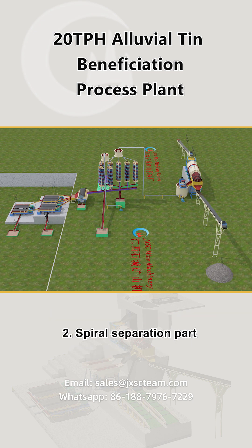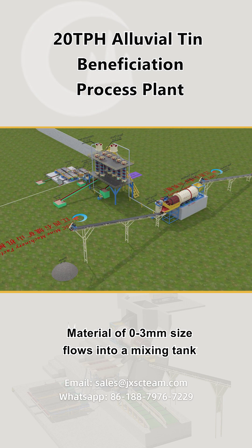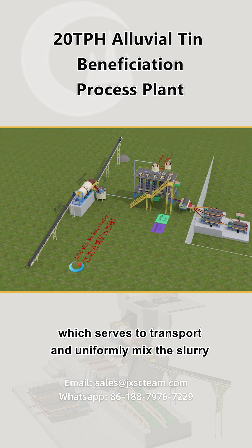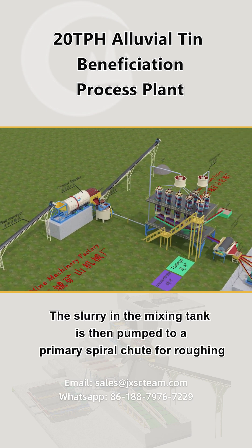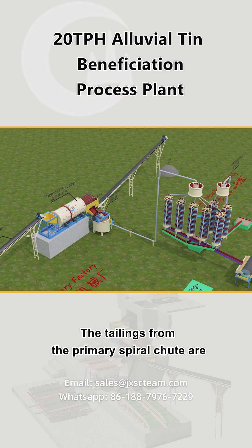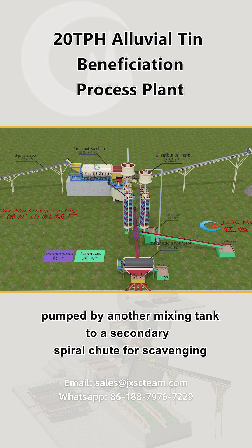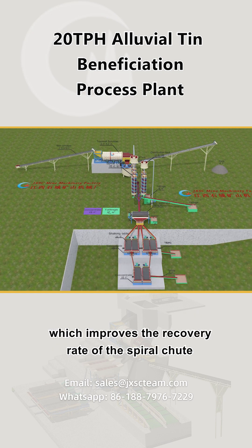2. Spiral separation part. Material of 0 to 3 mm size flows into a mixing tank, which serves to transport and uniformly mix the slurry. The slurry in the mixing tank is then pumped to a primary spiral chute for roughing. The tailings from the primary spiral chute are pumped by another mixing tank to a secondary spiral chute for scavenging, which improves the recovery rate of the spiral chute.